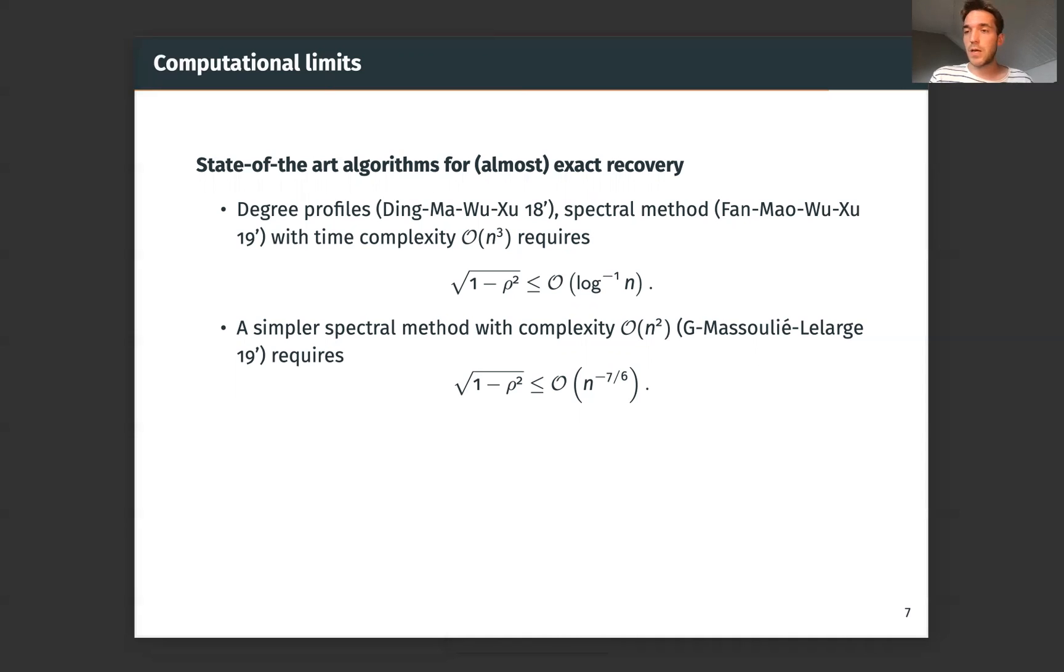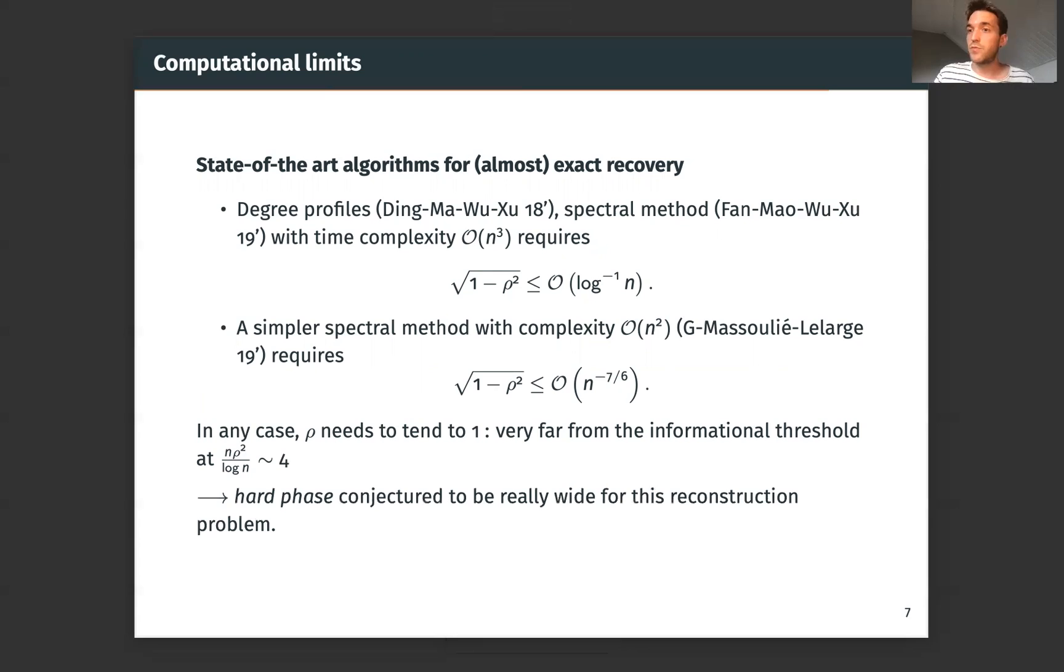So in all cases, we need ρ to tend to one to be able to align our matrices in polynomial time. And this is really far from the informational threshold, which is at ρ² / log n of the order four. So this is typically a problem where we can conjecture the hard phase to be really wide.